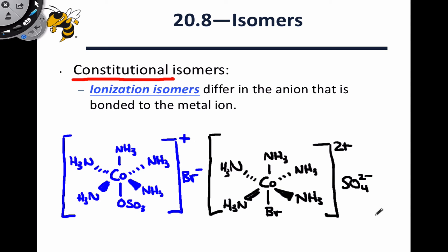In a previous video where we introduced ligands, we talked about the idea that a counter ion — especially an anionic counter ion — can potentially serve as a ligand. It's important when we write molecular formulas in text form to use square brackets to distinguish what's actually coordinately covalently bonded from what's only ionically bonded to the complex. Ionization isomers are constitutional isomers based on this idea that an anion can serve either as a ligand or a counter ion. Ionization isomers differ in the anion that's bonded to the metal ion.